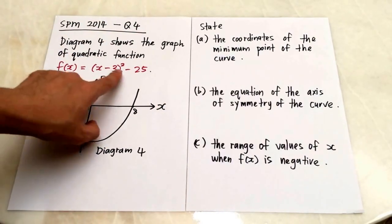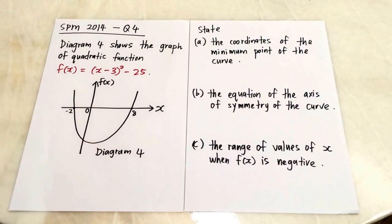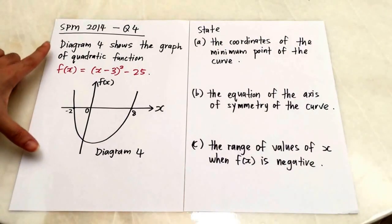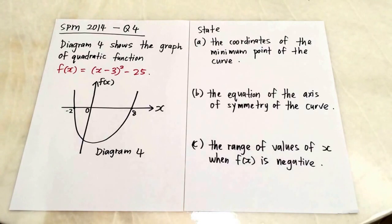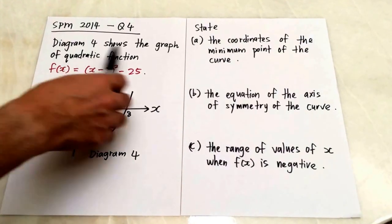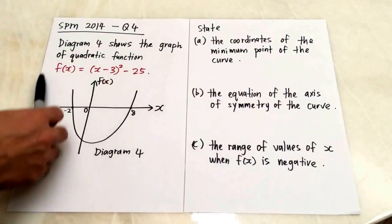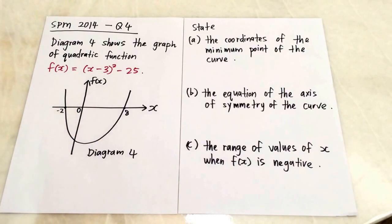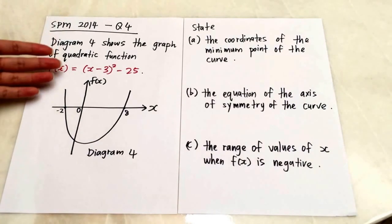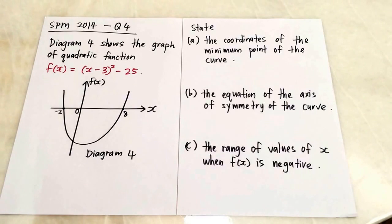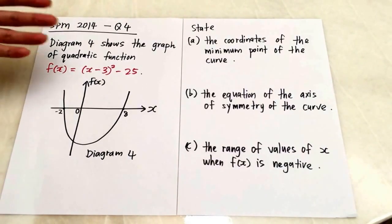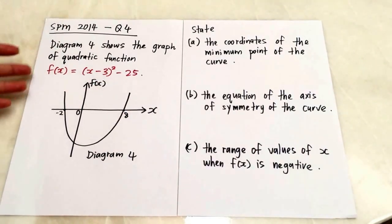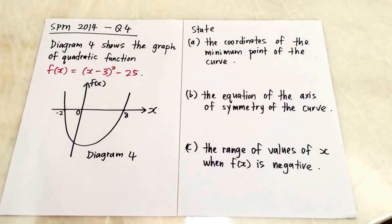The function is f(x) equals x minus 3, in bracket, squared minus 25. For this chapter, you have to understand completing the square, how to get a maximum or minimum point from the equation, how to get the axis of symmetry, and how to sketch the graph. If you're not sure, you can find my video called Completing the Square.